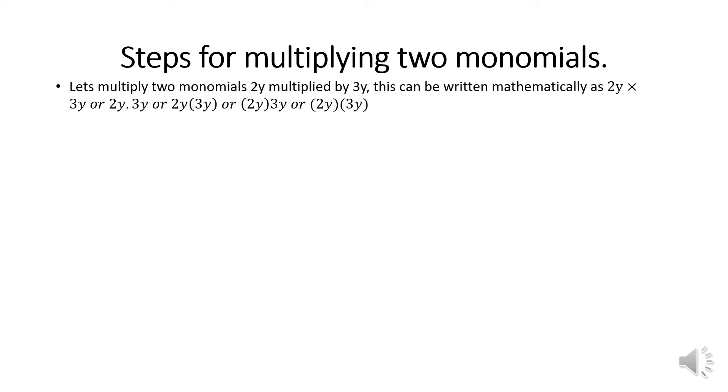Now we have done the simple operations of grouping like terms. Let's do some multiplication — the simplest of all. Remember, with mathematics we start with simple operations and then give you some challenging complex operations, so you grasp the principle by looking at simple operations. Let's work with multiplying two monomials.